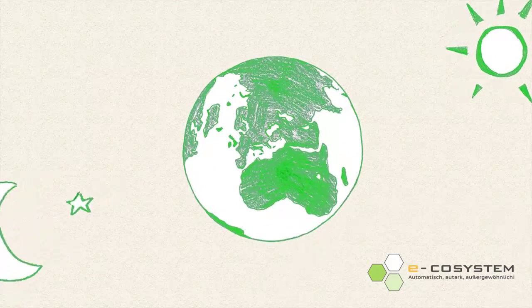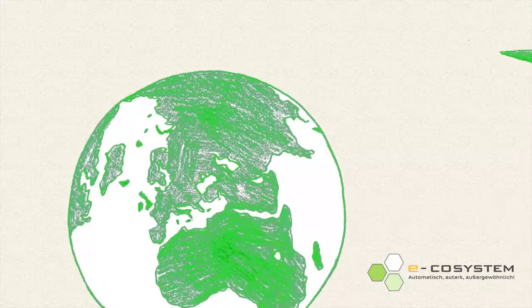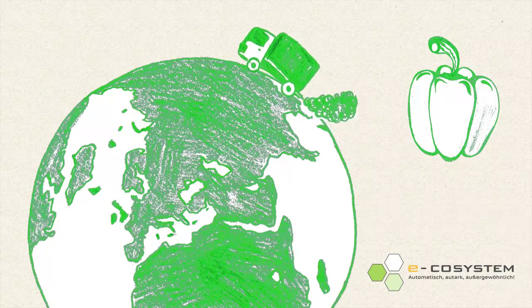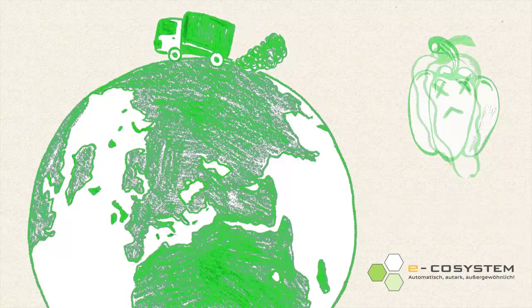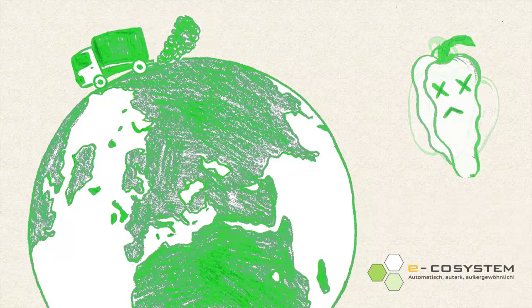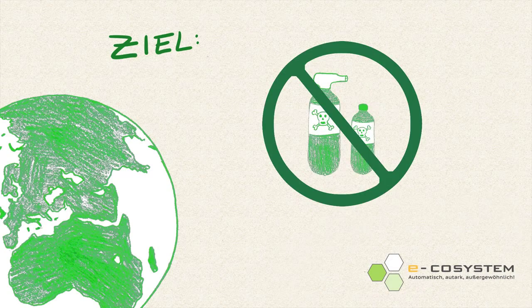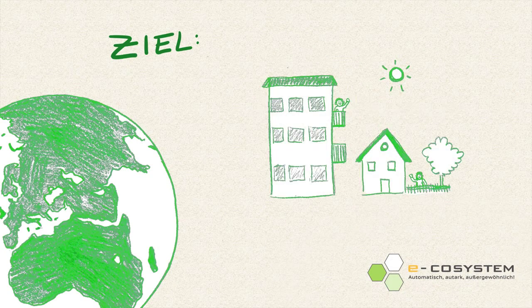The ecosystem is a vision of tomorrow that can be realized today. Every day vegetables are transported over long distances from point A to point B. This pollutes the environment, many fruits decay and spoil during transport and the flavor also suffers. Our objective: fresh vegetables without chemicals year-round in every household.